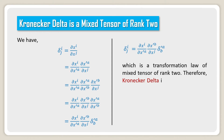So this is a transformation law of a mixed tensor of rank 2. Therefore Kronecker delta is a mixed tensor of rank 2.